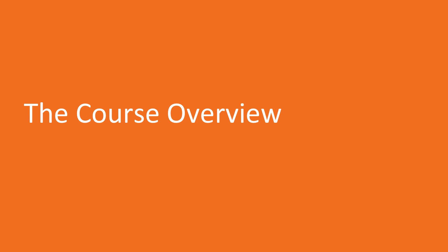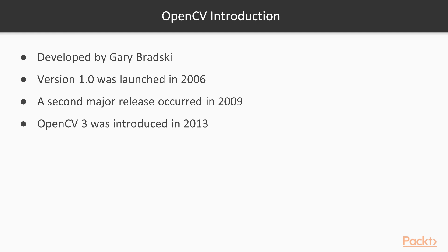So let's now talk about OpenCV. OpenCV was originally developed at Intel by a team led by Gary Bradsky as an initiative to advance research in vision and promote the development of rich vision-based CPU-intensive applications. After a series of beta releases, version 1.0 was launched in 2006. A second major release occurred in 2009, with the launch of OpenCV2 that proposed important changes, especially the new C++ interface.